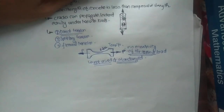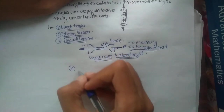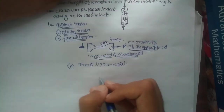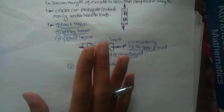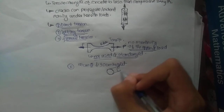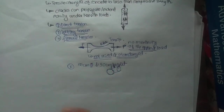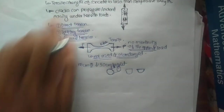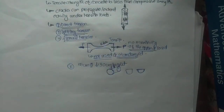Therefore, this method is rarely used and not standardized. Instead, the splitting test and flexural test are highly used. The splitting test is used with a cylindrical specimen of 15 cm diameter and 40 cm height. Tensile forces are applied to the cylindrical specimen, and the point where it fails or splits into two parts gives the value of its tensile strength. Flexural tension will be discussed in further videos.